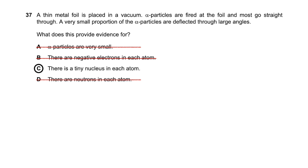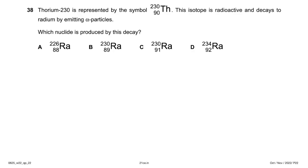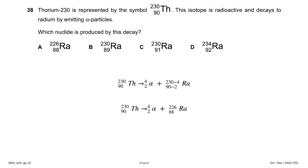Thorium-230 (²³⁰₉₀Th) is radioactive and decays by emitting an alpha particle. An alpha particle has mass number 4 and proton number 2, so the daughter nucleus has mass number 230 − 4 = 226 and proton number 90 − 2 = 88. That is ²²⁶₈₈Ra (Radium-226). Answer: option A.